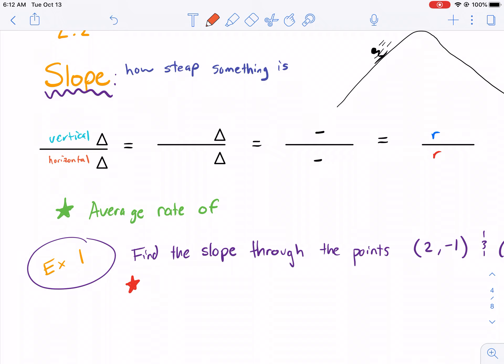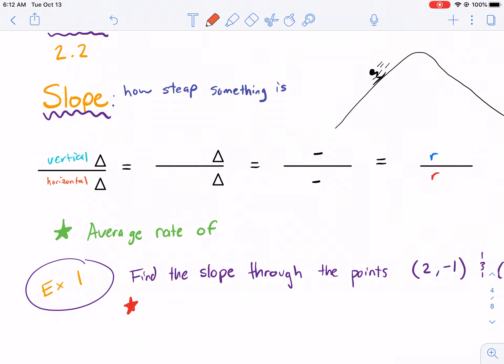So if the number changes a big number for vertical but very small for horizontal, it's going to be a big slope, a steep slope. But if it's very small and a very big number here for horizontal, then it's going to be very flat because the horizontal change is greater than the vertical change. And that will equal a small slope.